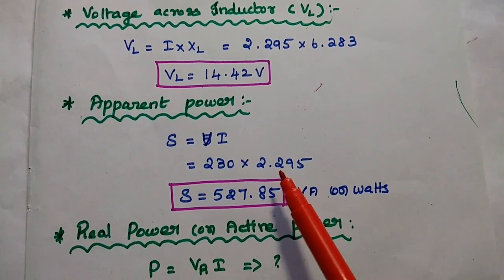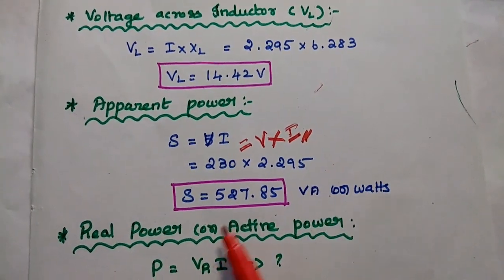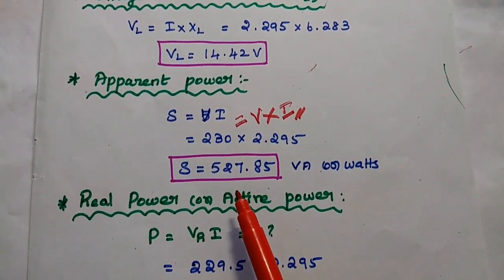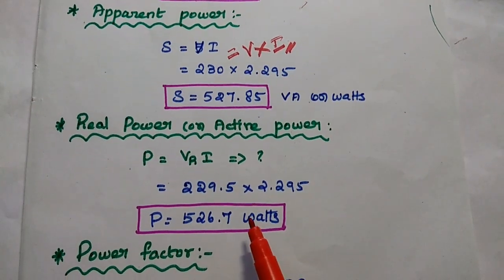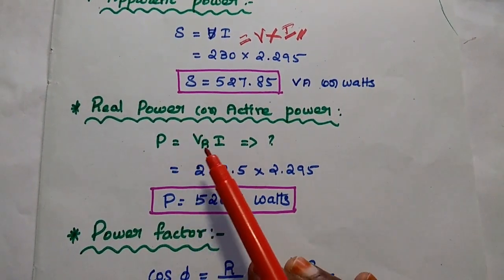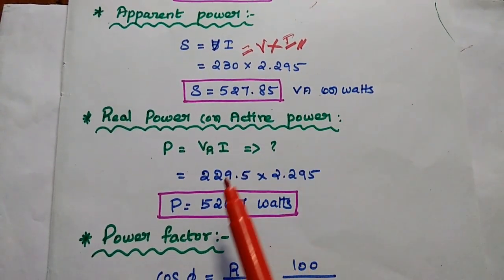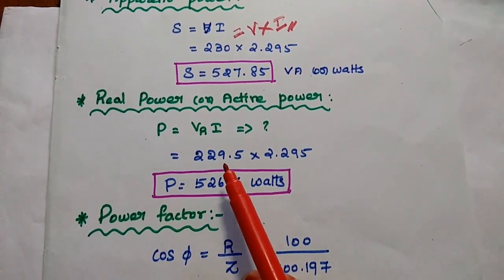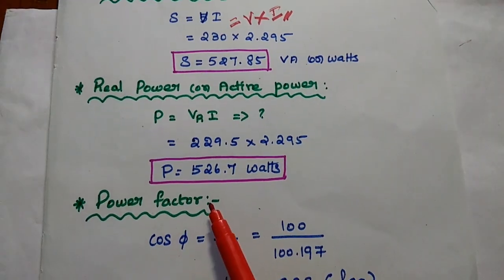Next is apparent power, which can be calculated using the formula V into I. Substituting V as 230 and I as 2.295, the apparent power is equal to 527.85 volt ampere. Next, real power — also called active power — considers only the resistive element: P is equal to VR multiplied with I, that is 229.5 into 2.295. The answer is almost the same as the apparent power, that is 526.7 watts.